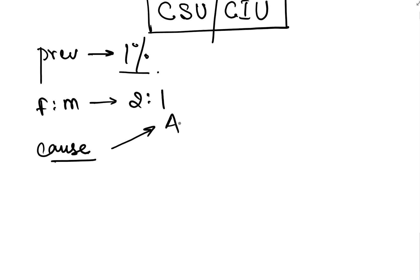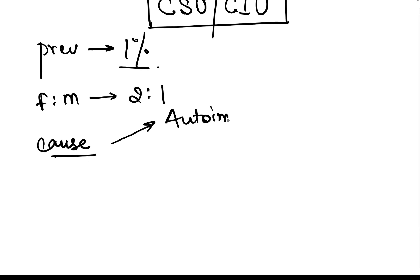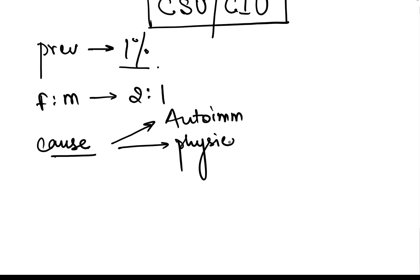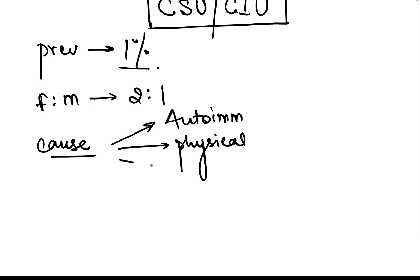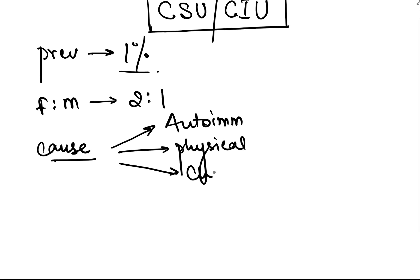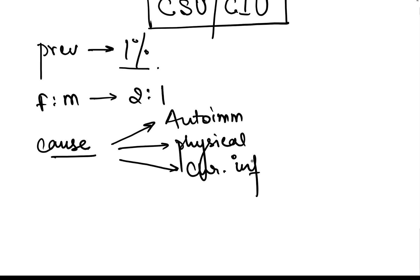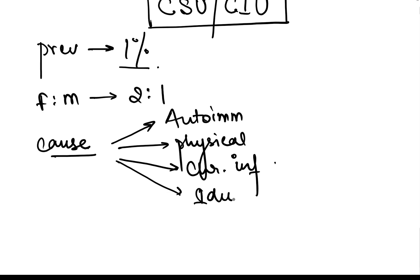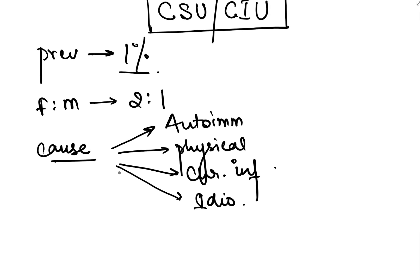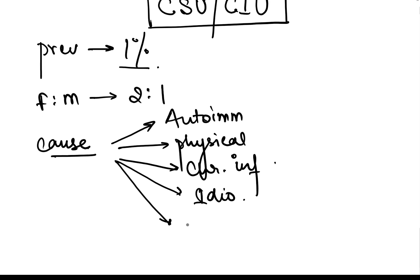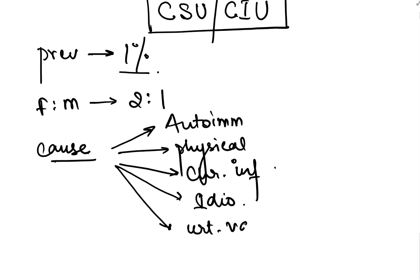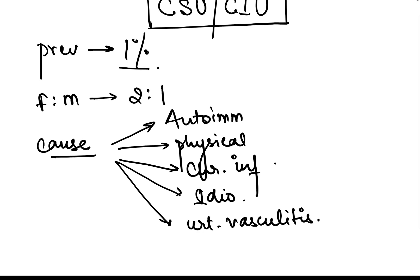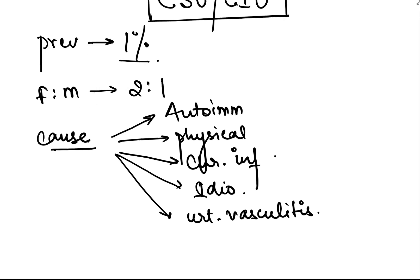The causes of chronic spontaneous or idiopathic urticaria are many: it can be due to autoimmune factors, physical stimuli, chronic infection, idiopathic causes — as the name suggests — and last but not least, urticarial vasculitis.